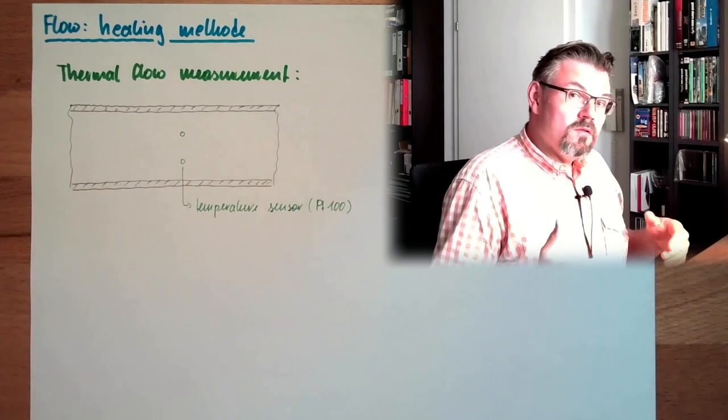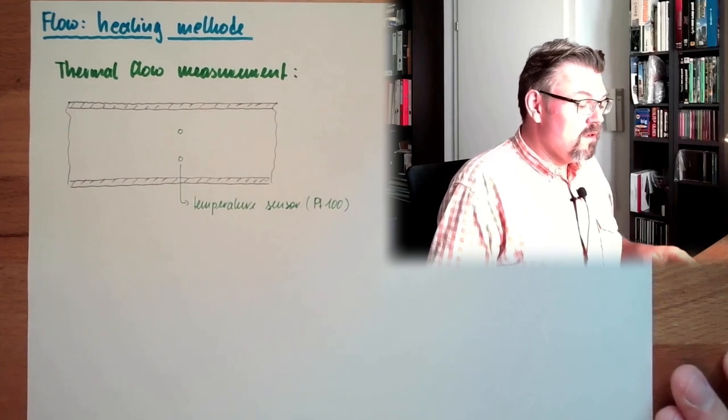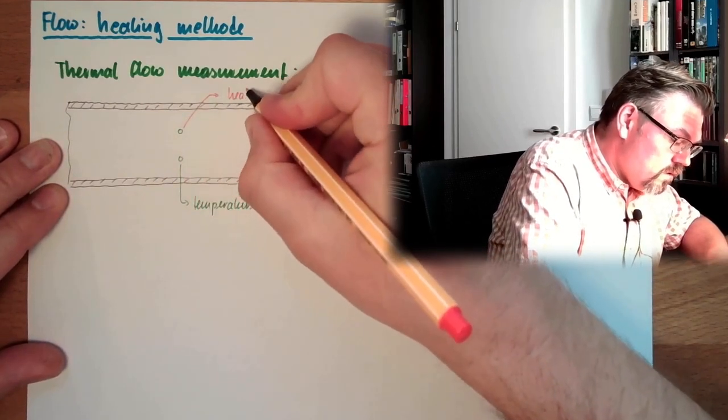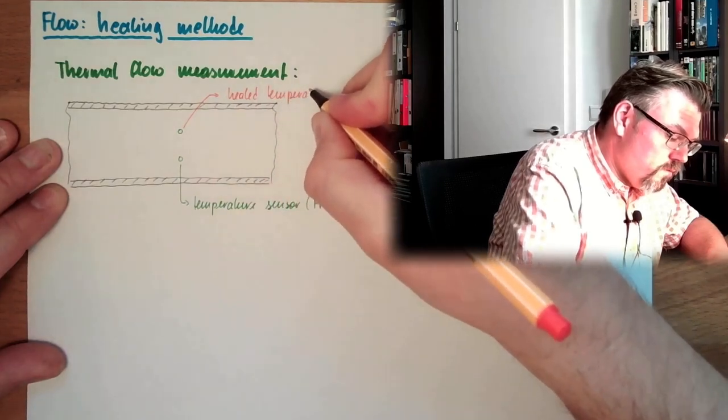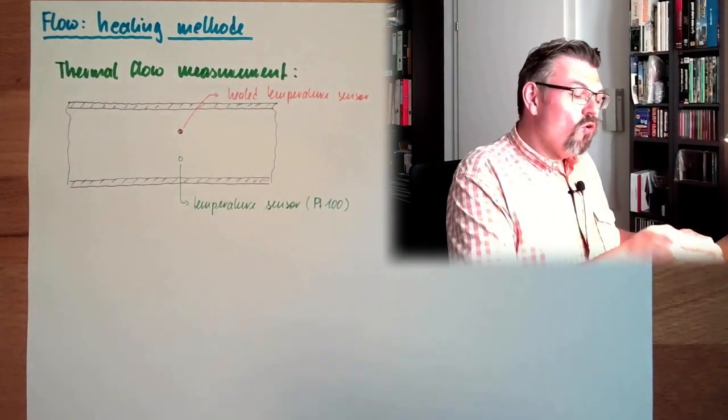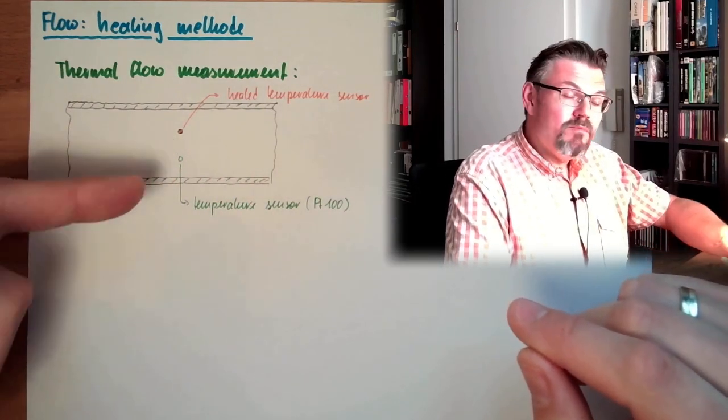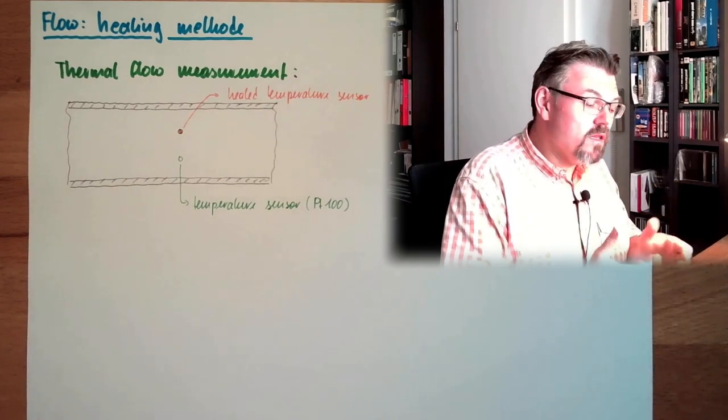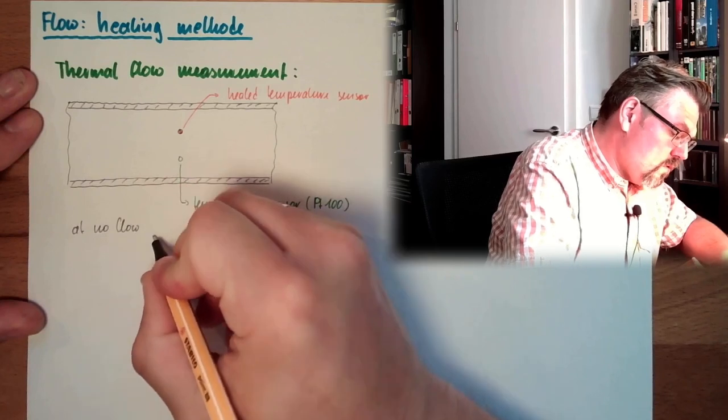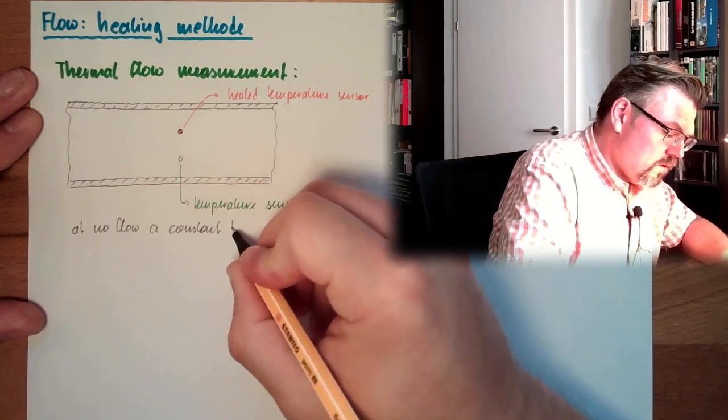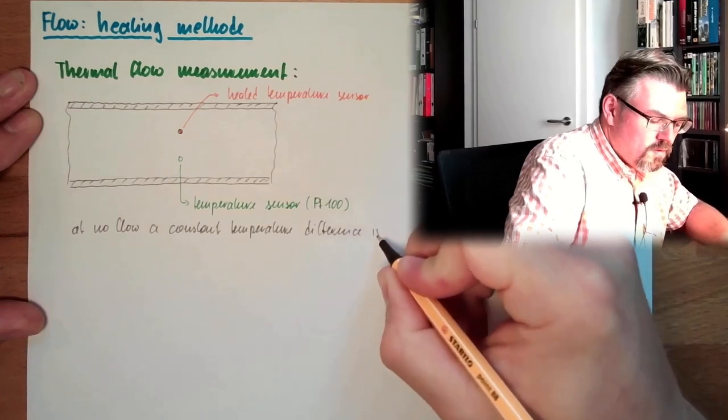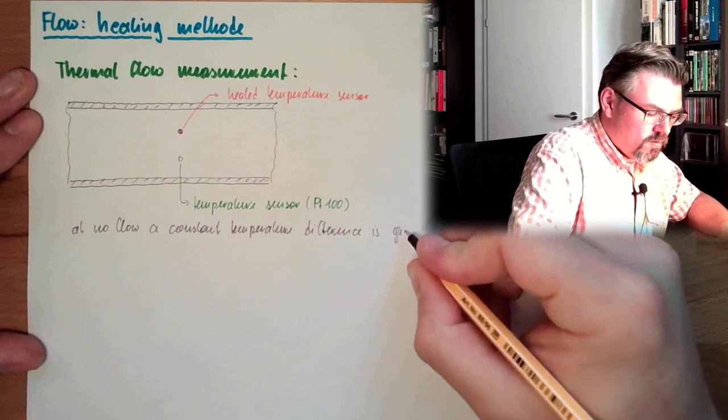Now one is measuring the actual temperature of the gas or the liquid in there, and the other one is heated. So this one is a heated temperature probe. If there is no flow at all, there will be a certain temperature difference depending on the heating power. So at standstill or at no flow, a constant temperature difference is given.